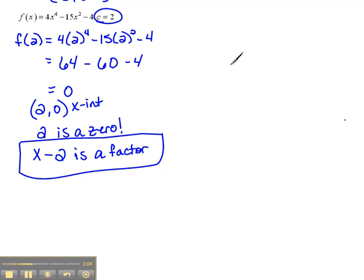Well, the best way to do that is just to perform the division. So we have 4x to the fourth. Now, I don't have any x-cubes, so remember we have to put in 0 placeholders minus 15x squared. We don't have any x's, so we have to put in a 0 placeholder minus 4, divided by x minus 2.